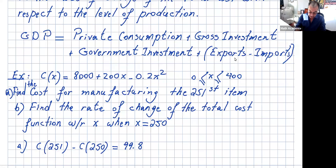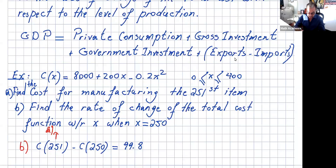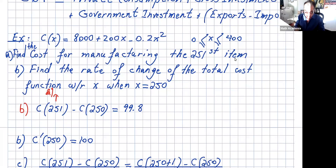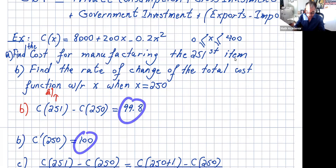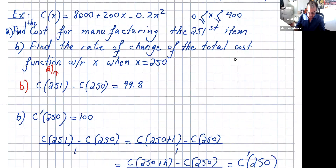For part B, we want to know what happens to the cost when we go from item 250 to item 251. The cost of going from item 250 to 251 is 99.8 cents. If we take the derivative of the cost function and calculate C′(250), we get 100, which is very close to that number.